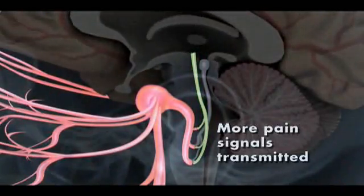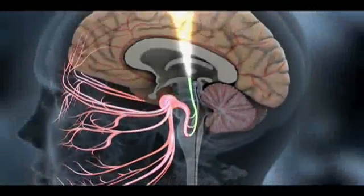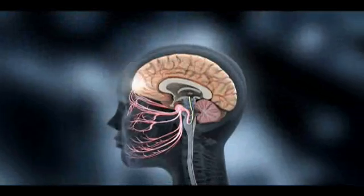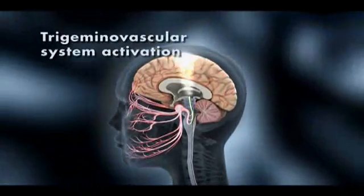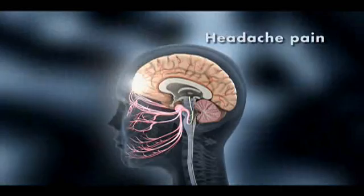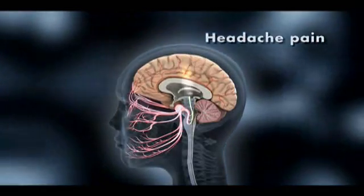Both increased cortical excitability and dysfunctions in the brainstem and midbrain are hypothesized to contribute to the activation of the trigeminovascular system, which starts the pain of migraine.